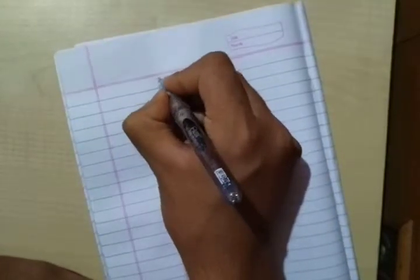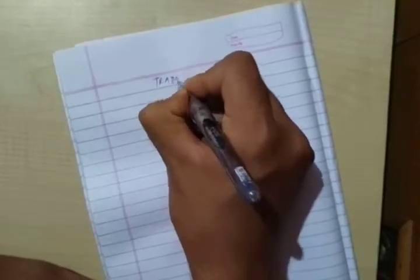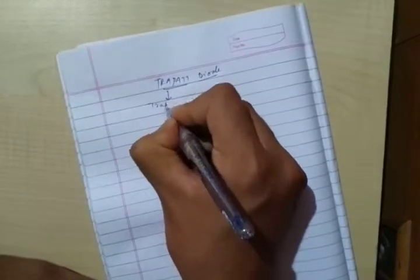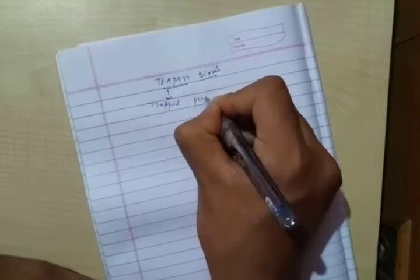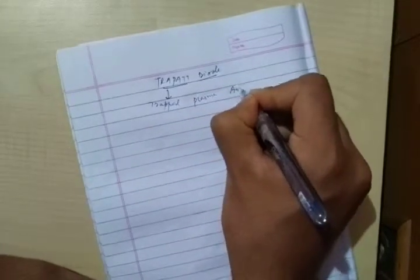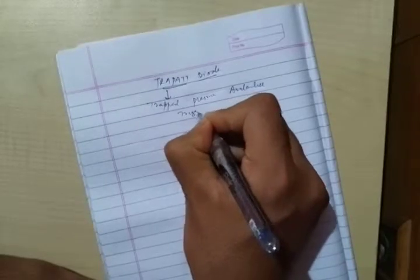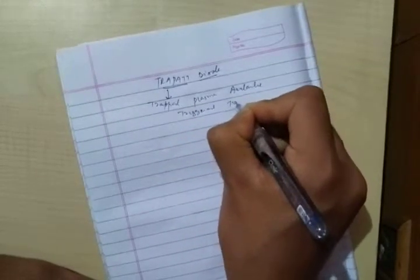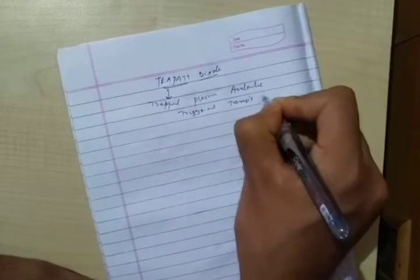Today our topic is TRIPAD Diode. What is the full form of TRIPAD Diode? TRIPAD Diode is Trapped Plasma Avalanche Triggered Transient Diode.